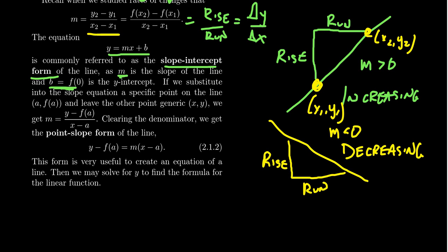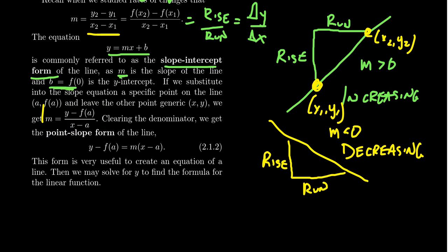Another approach is to use the slope formula where one of the points is a known specific point (a, f(a)) — a known x1, y1 — but you leave the other point as generic variables x and y. Then you take this equation and solve for y, which gives back slope-intercept form. In the interim, you get an equation referred to as the point-slope form of a line, and it often works as a good starting point for finding equations of lines. The slope is part of the equation, you have a specific point (x1, y1), and x and y are treated generically.